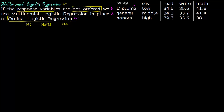There is another student 2. His socio-economic status is middle, his reading score is 34.3, his writing score is 33.7, and he chooses a general program. Then there is student 3. He comes from a higher socio-economic status, his reading score is 39.3, and he chooses an honors program.